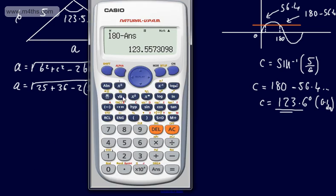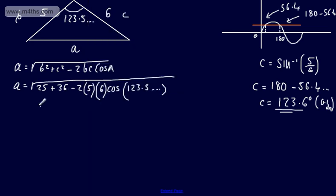So in the calculator we're going to have the square root of 25 plus 36 minus 2 times 5 times 6 times the cosine of the answer that I have in the calculator. That gives me 9.703.